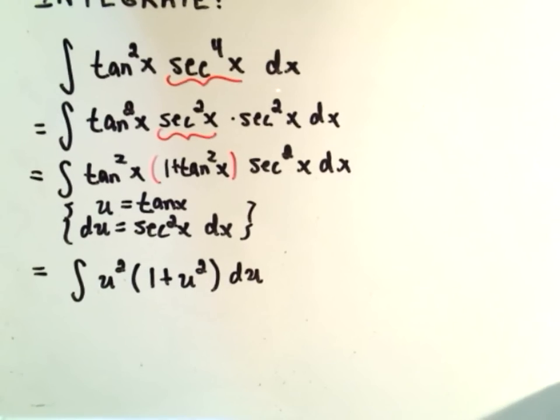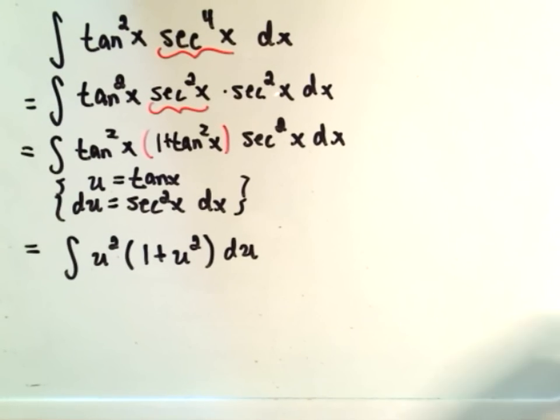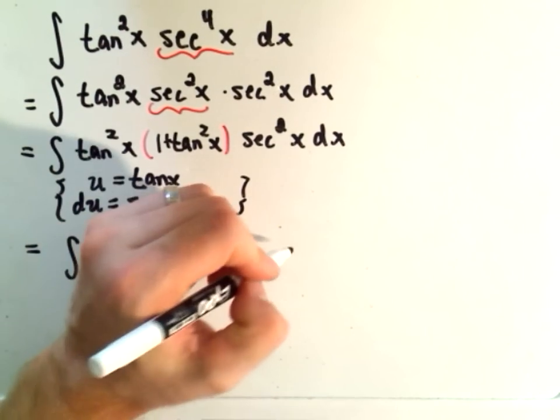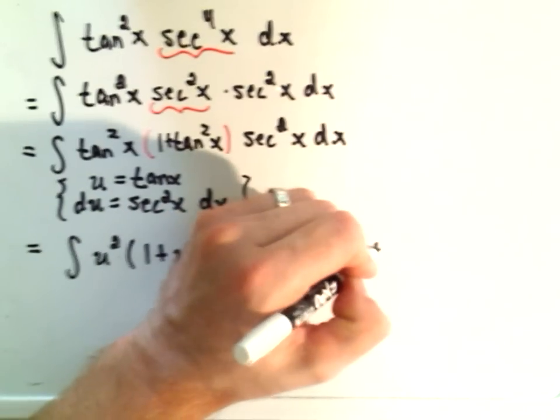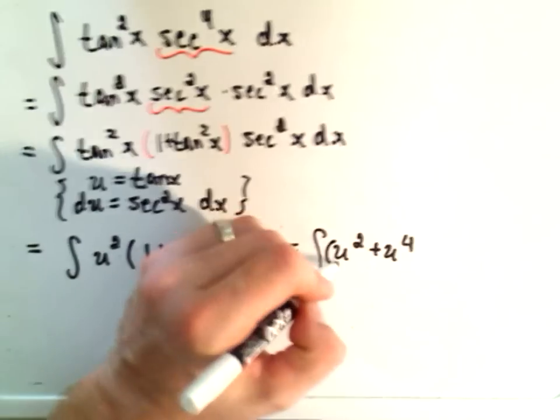Secant squared x dx is getting replaced with our du. Again, I assume if you are watching this, you've probably seen a little bit of u-substitution, so I'm going through it here a touch faster. If you distribute, you'll get u squared plus u to the fourth du.